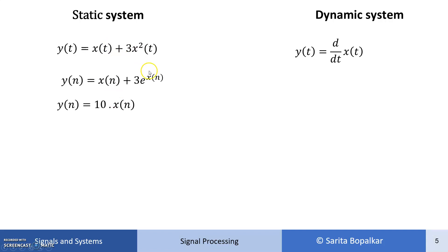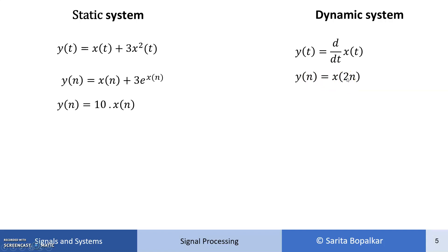Now let's look at dynamic system examples. First, y(t) = d/dt[x(t)] — differentiation is the difference between the present and the previous value, so the output depends upon the present input plus the previous input. Second, y(n) = x(2n) — there is an operation on the time factor n. At n = 1, y(1) = x(2), so the output at time 1 depends upon the input at time 2, meaning the present output depends upon a future input. So this is a dynamic system.